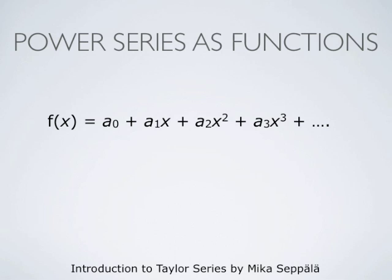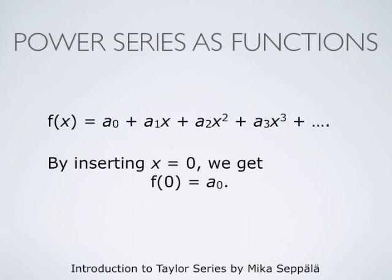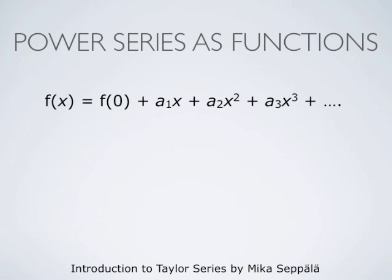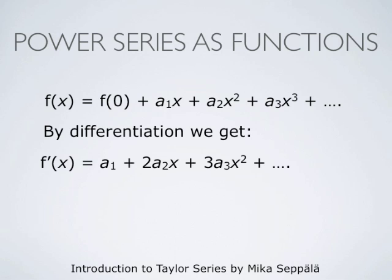We start with a converging power series a0 plus a1 times x plus a2 times x squared plus a3 times x cubed and so forth. This converging power series defines a function f of x. We wish to find a formula for the coefficients ak in terms of f. By inserting x equals 0, we get that f at 0 must be a0. So the power series is now f of x equals f at 0 plus a1 times x plus a2 times x squared plus a3 times x cubed and so forth. By differentiation, the derivative of f at x gives us a1 as the first term.